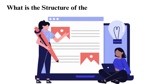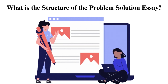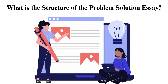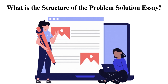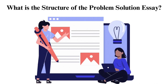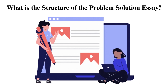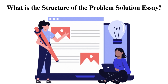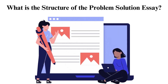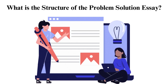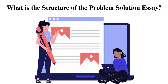What is the structure of the problem-solution essay? The problem and solution essay outline is the same as other essays. The essay should have an introduction, body, and conclusion. In all three sections, ensure you cover the problem, solution, and evaluation with the right tone, as explained above.